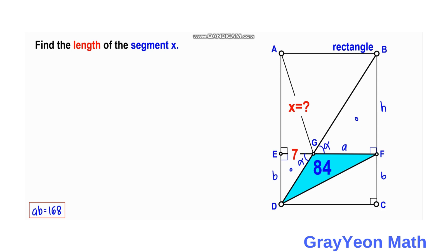Since both are right triangles, the third angle in each is beta, which is the complement of alpha. The smaller right triangle EGD also has beta as its third angle, matching the larger right triangle GFB. Therefore, these two triangles are similar by the Angle-Angle-Angle similarity theorem.